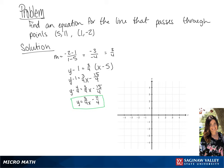To graph this, we're going to use the two points that are given: (5, 1) and (1, -2). And we can graph this line.